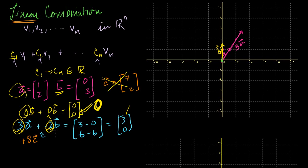Then we subtract 2B from that. So minus 2B looks like this. If you add 3A to minus 2B, we get to this vector right here — and that's exactly what we did mathematically. You get the vector [3, 0]. But this was just one linear combination of A and B.